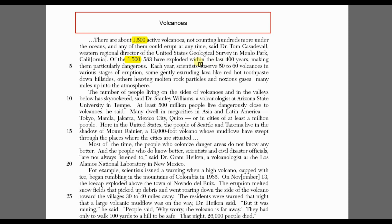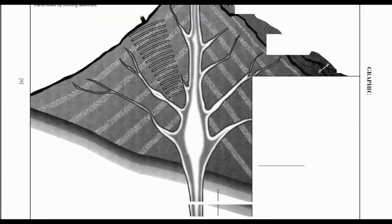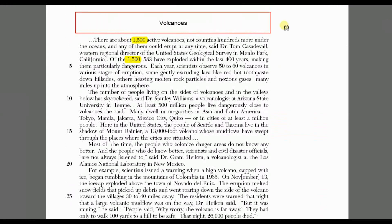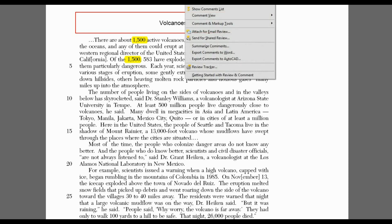Now back to the question: the world's 1,500 active volcanoes have the common characteristic of... I see the question is asking what all 1,500 volcanoes have in common — in other words, how are they the same? When I look back at the two different references to 1,500, I start thinking like a test writer. If I were writing a test and wanted to challenge the student, I might use these two references to see how carefully they are reading — in other words, how can I trick the test taker? I can either highlight the relevant information or cross out the irrelevant information.